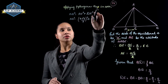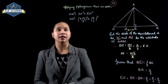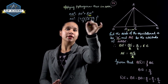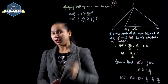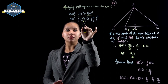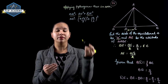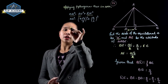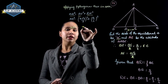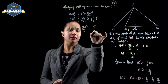Now apply the Pythagoras theorem in triangle ADE. Hypotenuse square is equal to base square plus perpendicular square. So AD² is equal to AE² plus DE², which gives A²·3/4 plus A²/36.